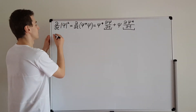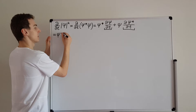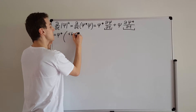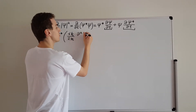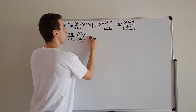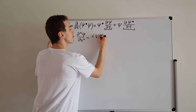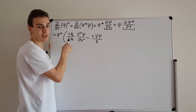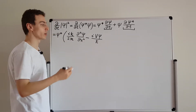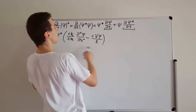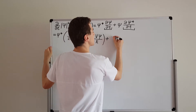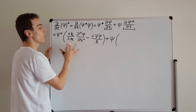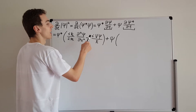So what we're going to have is psi star multiplied by the expression we found in the previous video, which is i h-bar over 2m times d²psi/dx² minus iV·psi over h-bar. Here we have a minus sign and here we have a plus sign. This was obtained by manipulating the Schrödinger equation.